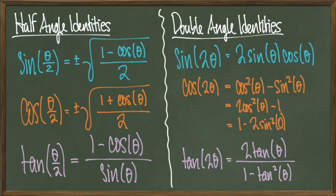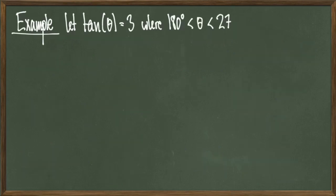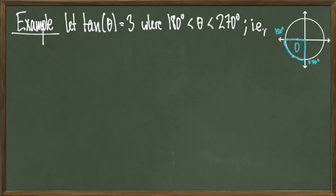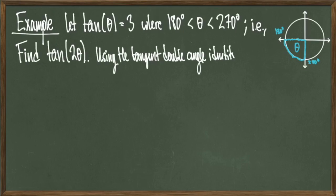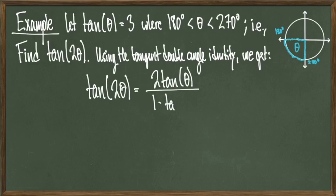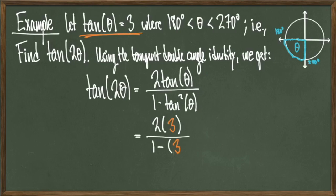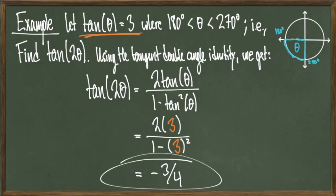Lastly, tangent of 2 theta equals 2 tangent theta over 1 minus tangent squared of theta. For our last example, let tangent of theta equal 3 where theta is an angle between 180 and 270 degrees — some angle in the third quadrant. The goal is to find tangent of 2 theta using the double-angle formula. Applying the formula, tangent of 2 theta equals 2 tangent theta over 1 minus tangent squared theta. Since tangent of theta equals 3, we replace and simplify to get negative 3 over 4 as the final answer. Thank you so much for your time.